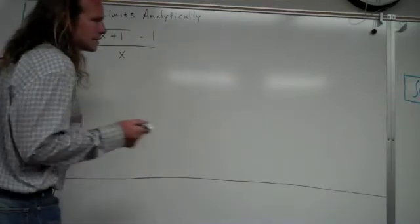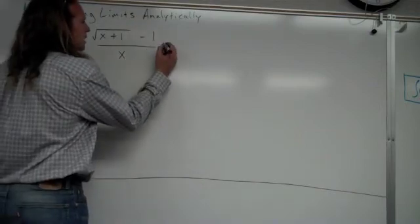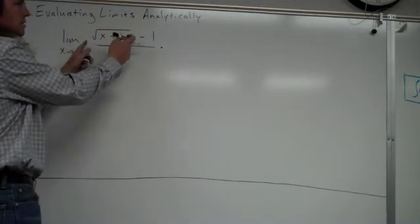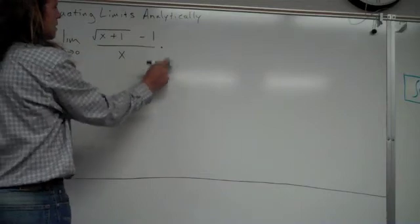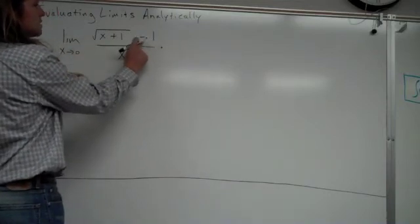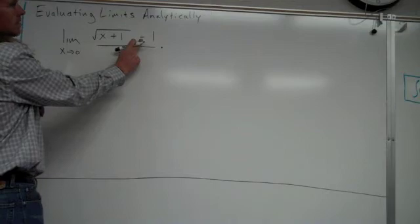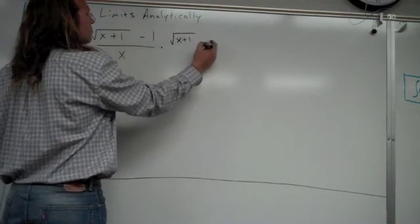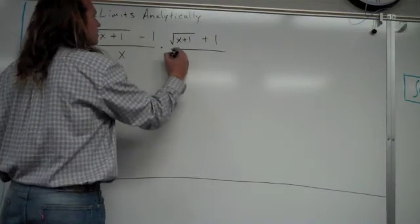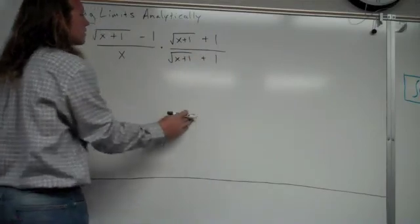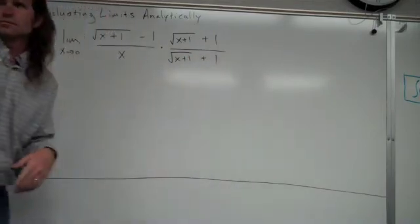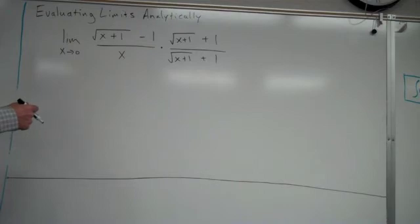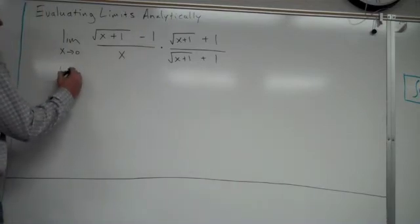So this technique called rationalizing is wonderful. You can go ahead and multiply. And it works with a square root thing. Rationalizing is going to work when you have a square root such as this in the problem. And you multiply the top and the bottom by the conjugate, which is just this exact thing on top, except for change that sign from minus to plus. If it was a plus, you'd change it to a minus. So it's going to be square root of x plus 1 plus 1 over square root of x plus 1 plus 1. So notice I'm just multiplying by 1 right here. So I'm not changing the value of the problem at all.